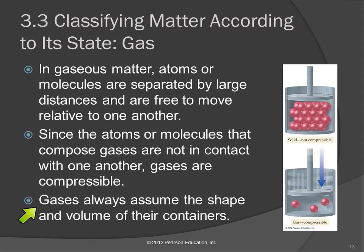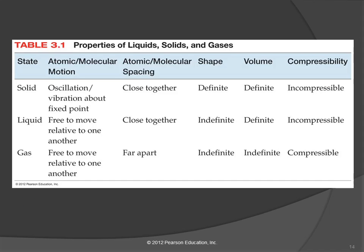Gases also assume the shape of their container and assume the volume of their container. To summarize: liquids and solids have in common that they retain the same volume. Gases and liquids have in common that their shapes are changeable. And gases are uniquely compressible while solids retain their shape. This table summarizes all of that. Any questions?